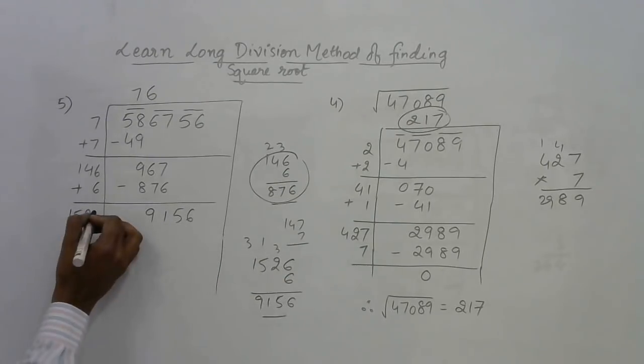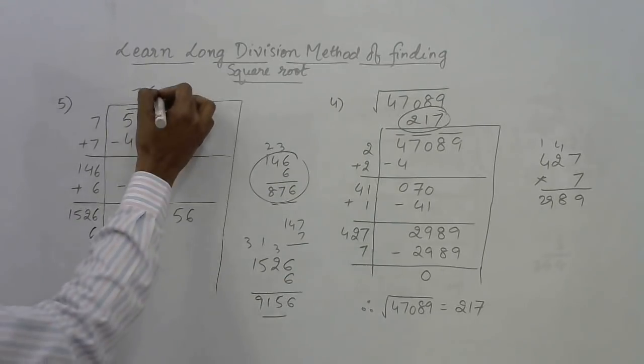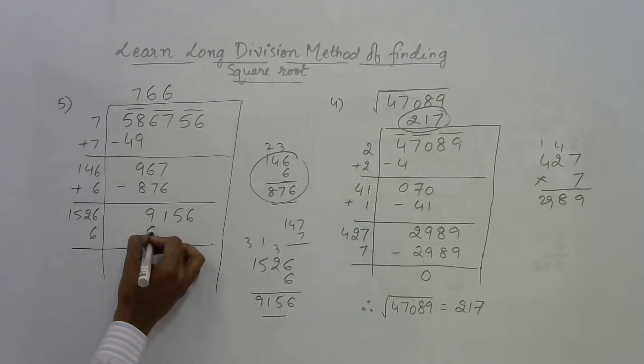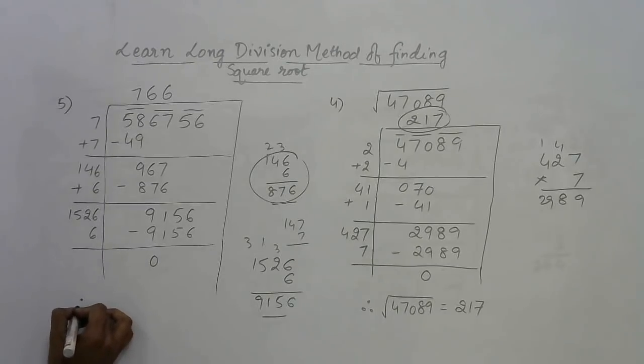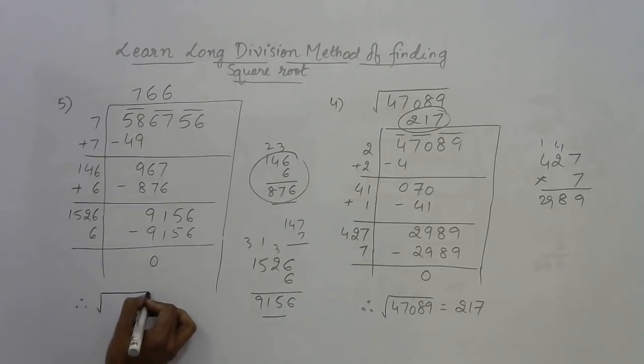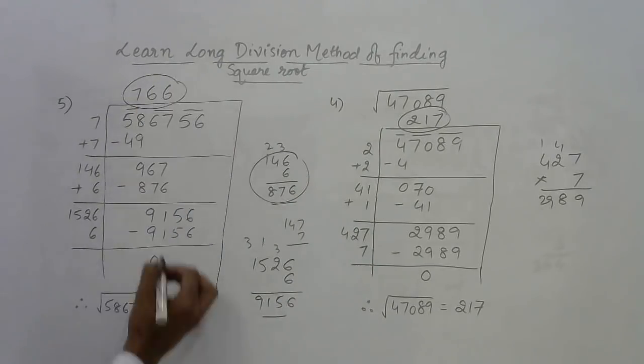6 is the number which has to be chosen here and in the answer, which will give you 9156 here, leading to a difference of 0 and thereby terminating the process to get the square root of 586756 as 766.